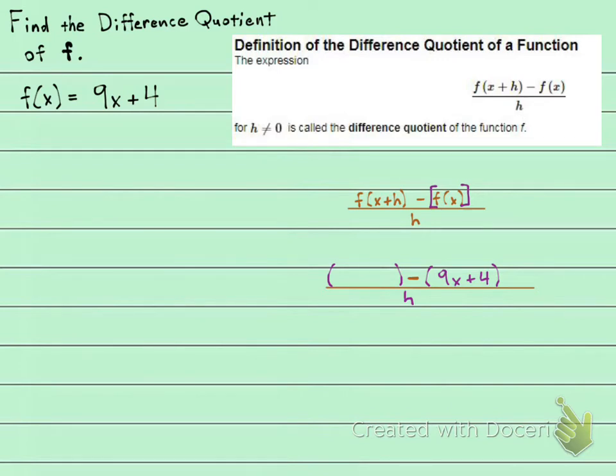So I know what the f of x is, it's 9x plus 4. The f of x plus h is going to be 9 times x plus h plus 4. Okay, so whatever you had for your x gets plugged in right here for your x.